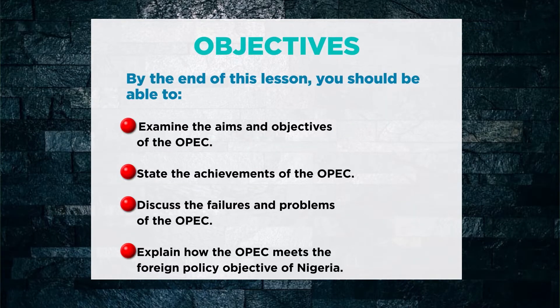By the end of this lesson, it is expected that you should be able to examine the aims and objectives of OPEC, state the achievements of OPEC, discuss the failures and problems of OPEC, and lastly, explain how OPEC meets the foreign policy objective of Nigeria.